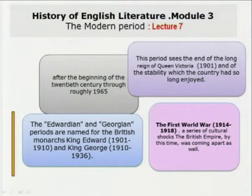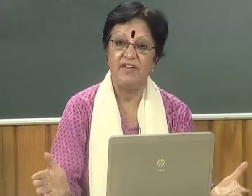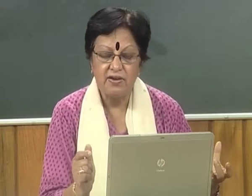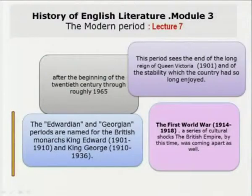Now we come to Lecture 7 of Module 3, History of English Literature — the modern period, which is very contemporary. The modern period spans from the end of the long reign of Queen Victoria around 1901 and the stability the country had long enjoyed, through the beginning of the 20th century to roughly 1965. Some writers at the end of the 19th century were already writing in this mode.